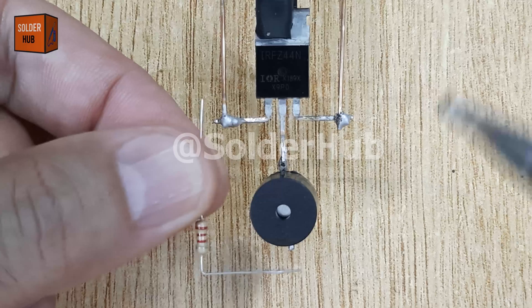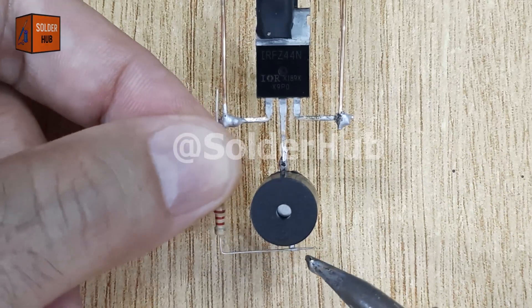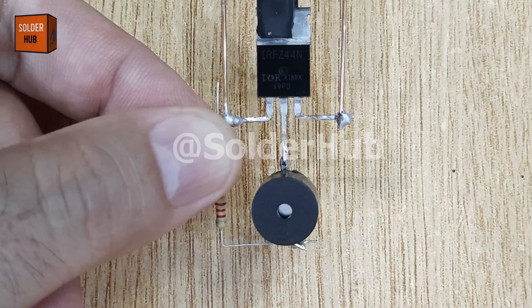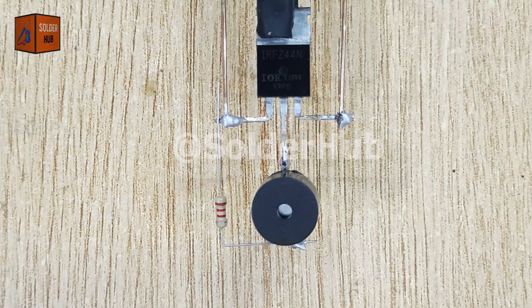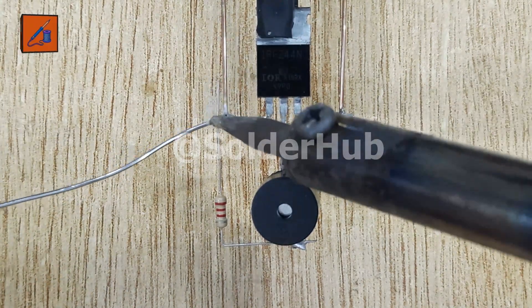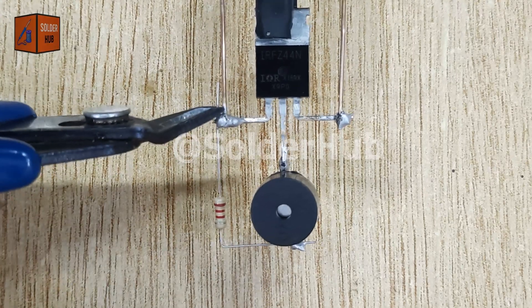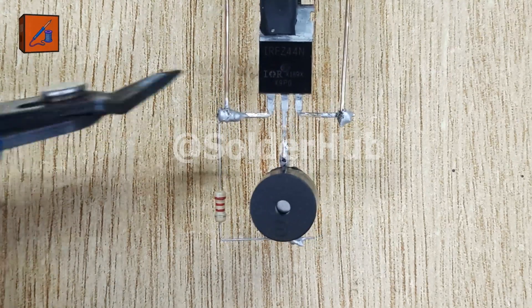Next, I take a 2.2kohm resistor. Resistors help control the current and protect components. I solder one end of the resistor to the positive pin of the buzzer and the other end to the gate pin of the MOSFET. This resistor ensures that the gate receives proper biasing and the buzzer gets the correct drive.